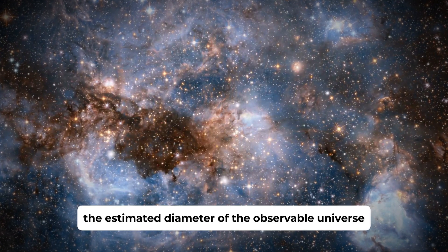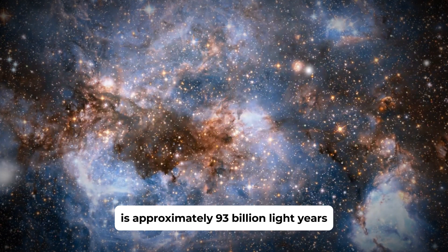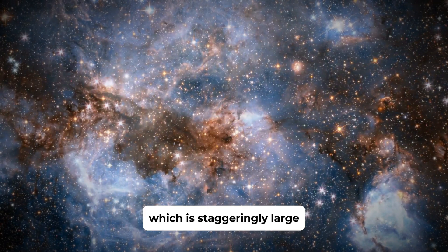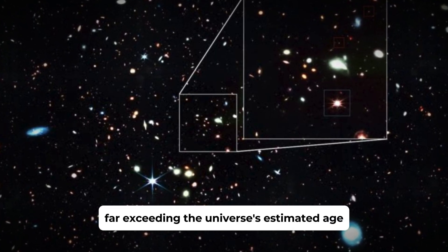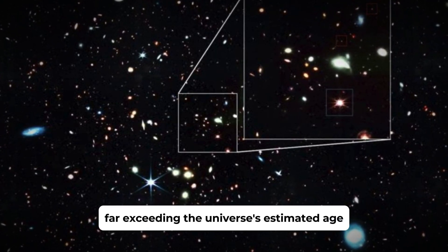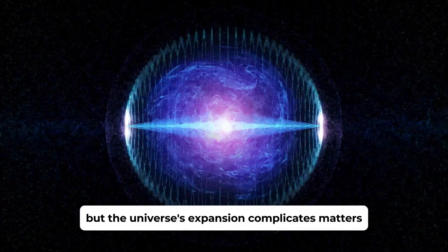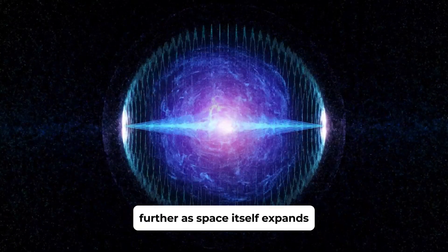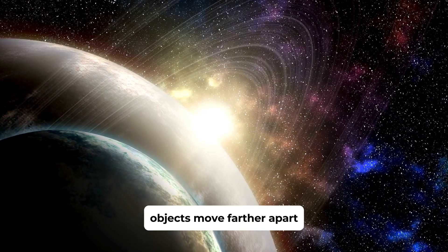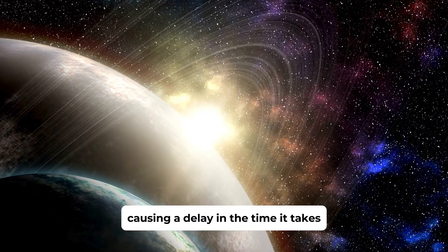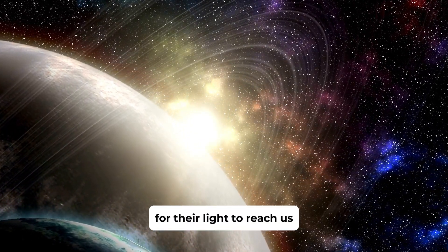The estimated diameter of the observable universe is approximately 93 billion light years, which is staggeringly large, far exceeding the universe's estimated age. But the universe's expansion complicates matters further. As space itself expands, objects move farther apart, causing a delay in the time it takes for their light to reach us.